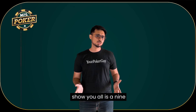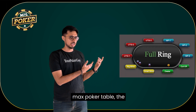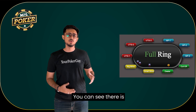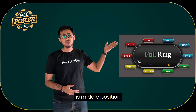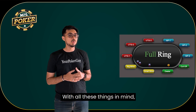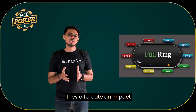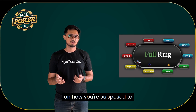Before that, I'll show you all a 9-max poker table. In a 9-max poker table, you can see there is early position, there is middle position, and there is late position. With all these things in mind, they all create an impact on how you're supposed to bet.